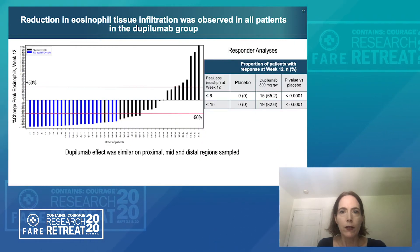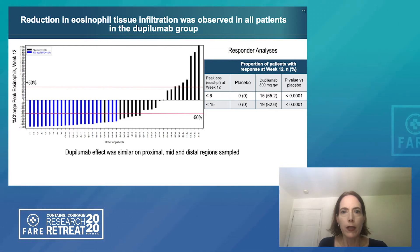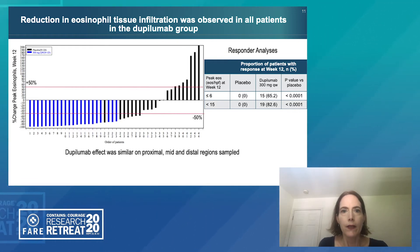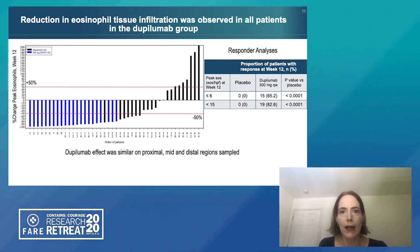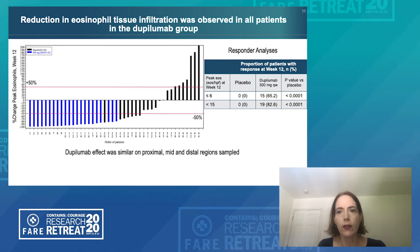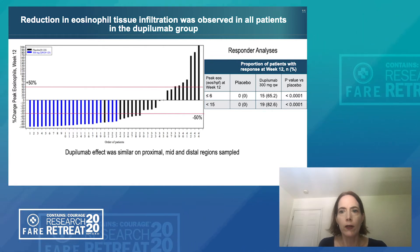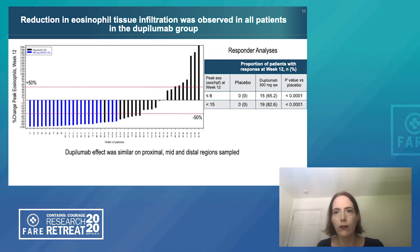This graph shows individual trial patients, with each patient represented by one bar. Patient numbers are on the x-axis, and the percent change in peak eosinophils at week 12 is on the y-axis. All patients treated with dupilumab had a marked reduction in esophageal eosinophils, with the majority achieving the less than 15 or less than 6 eosinophils per high-power field threshold.